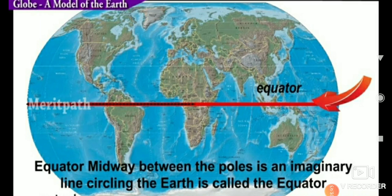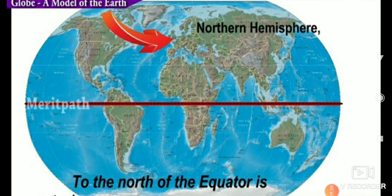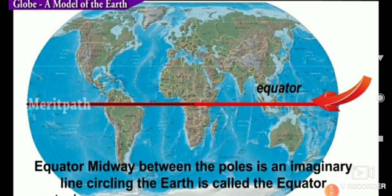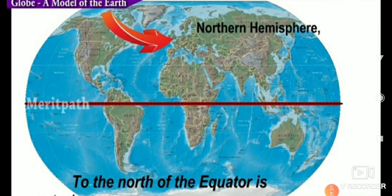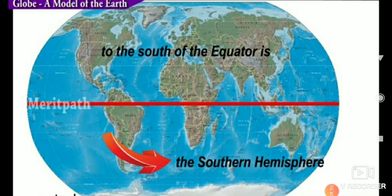Equator: midway between the poles is an imaginary line circling the earth, called the equator. To the north of the equator is the Northern Hemisphere, and to the south of the equator is the Southern Hemisphere.